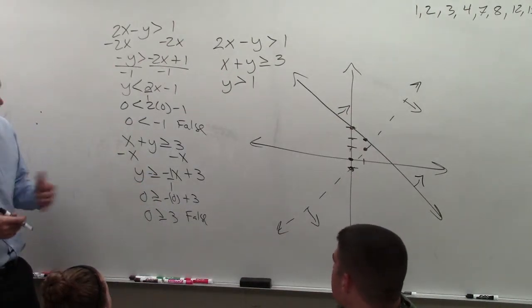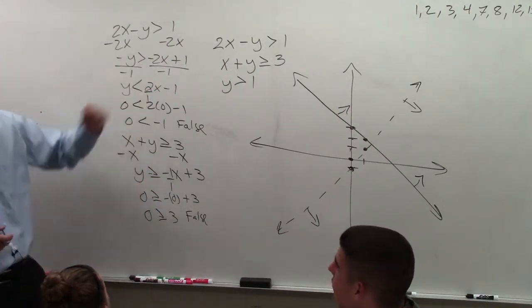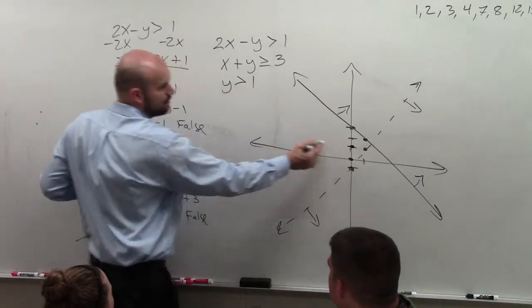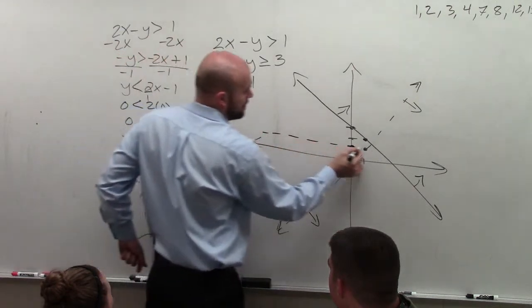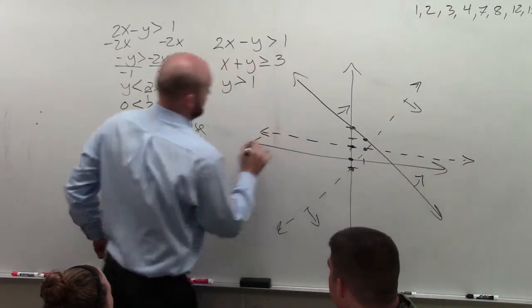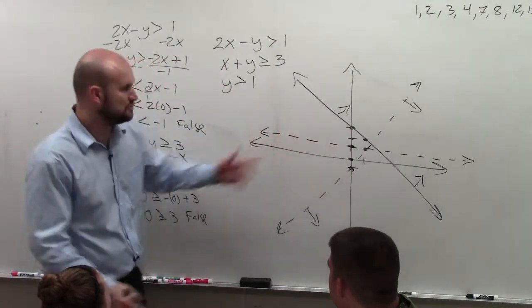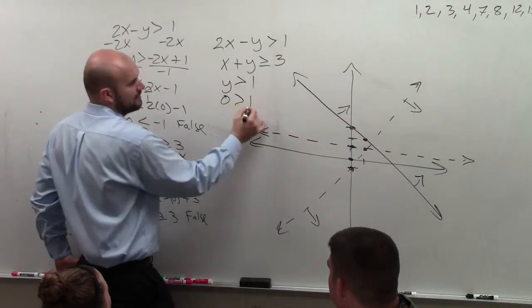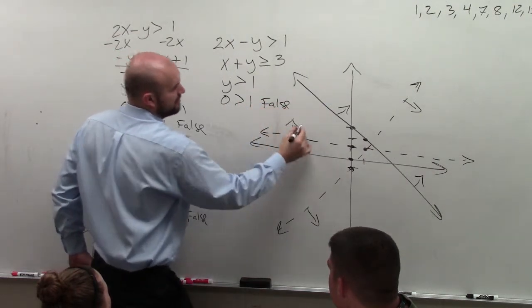On the last one, I have y is greater than 1. y is greater than 1 is a horizontal line where y is always equal to 1, so that's going to be a dashed line. If you choose a test point, choose 0 — there's no x coordinate, but you can plug 0 in for y. Again, that is false, so you're going to shade above.